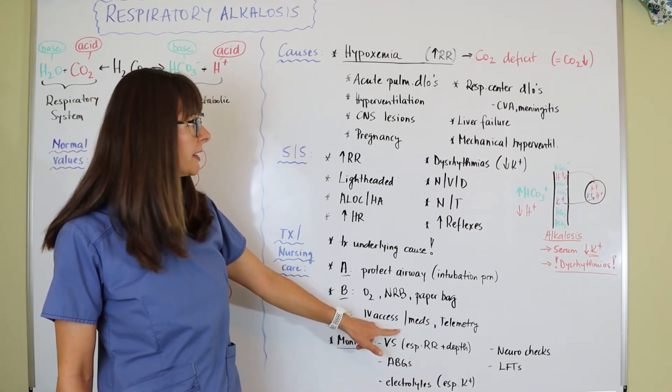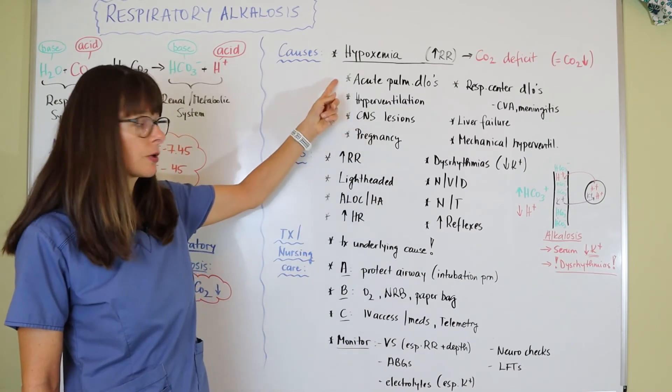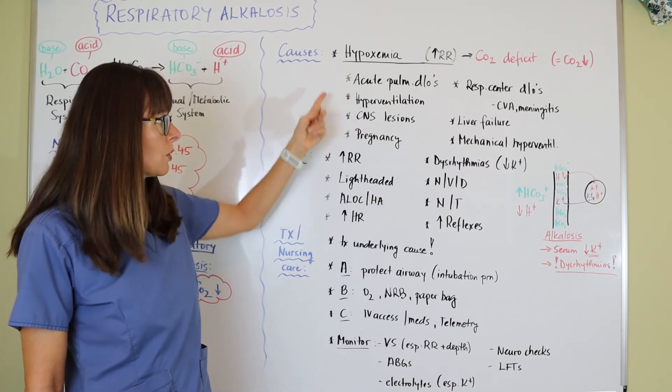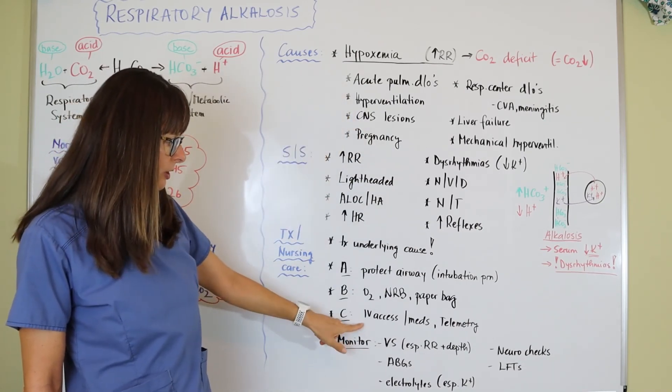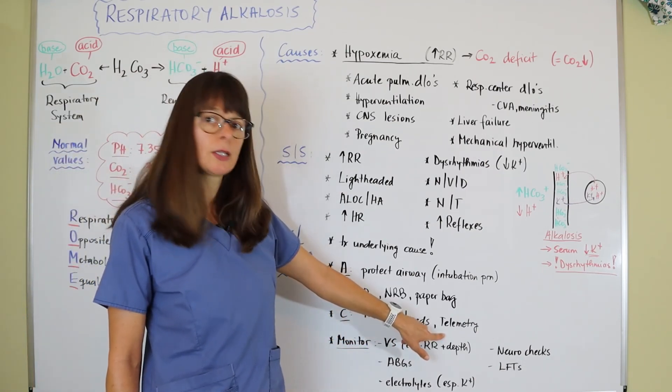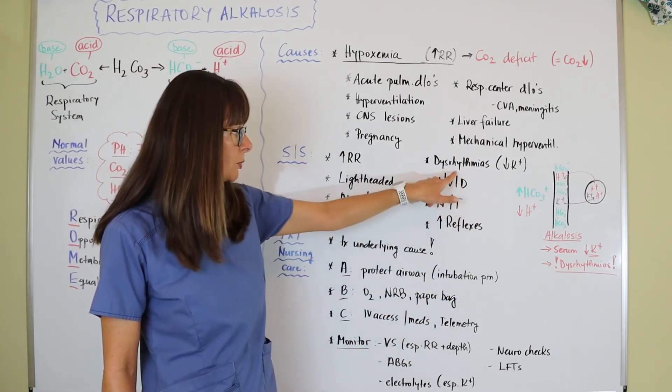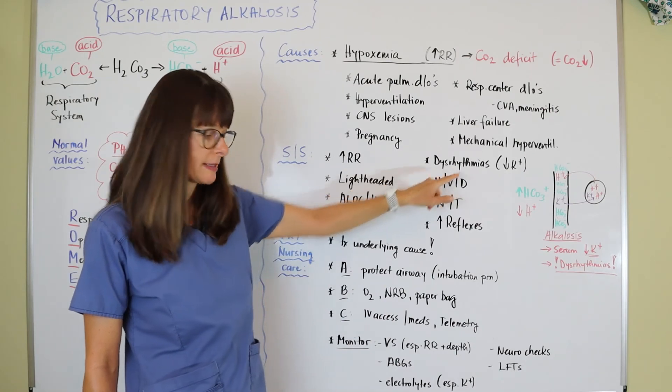C is for circulation. We always need good IV access on these patients so we can give them appropriate medications for pneumonia, stroke, PE, any of those things. They need to be on a cardiac monitor because we know that we might have some potassium abnormalities.